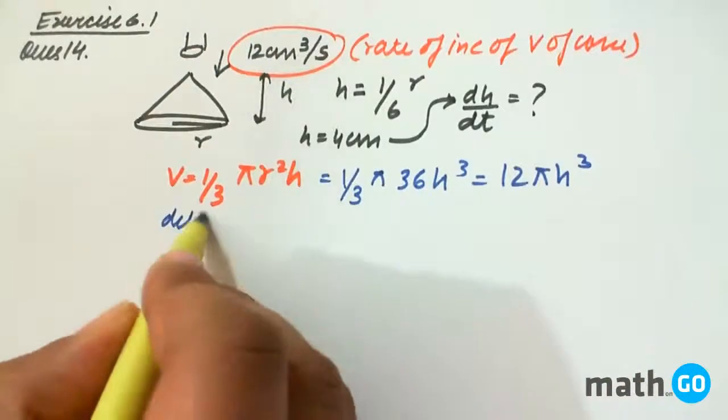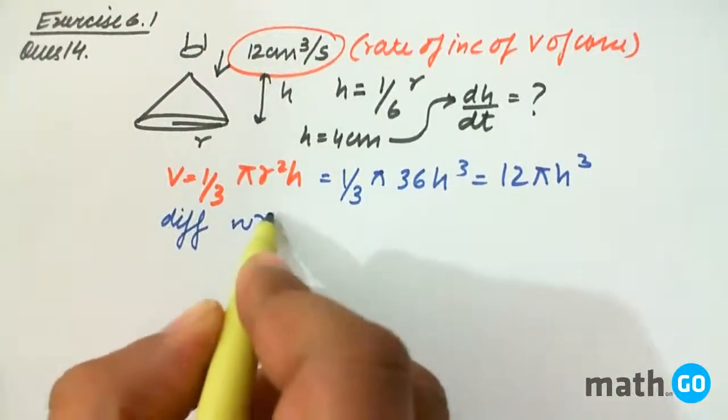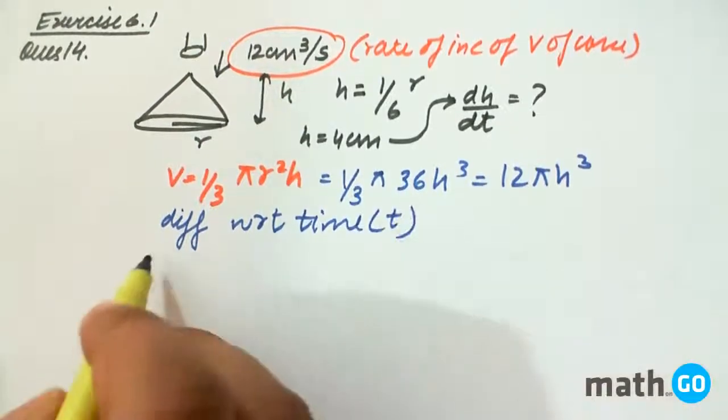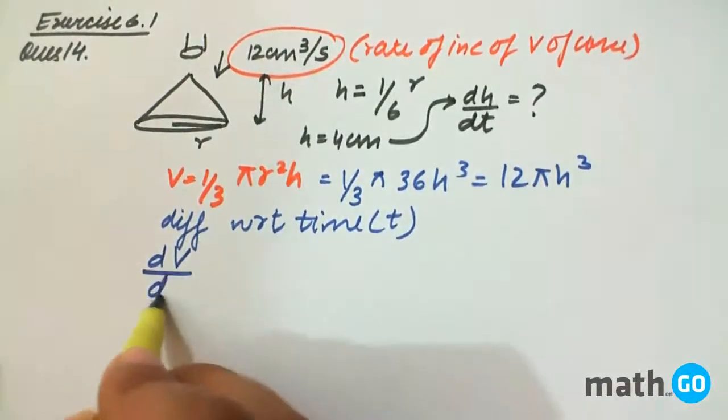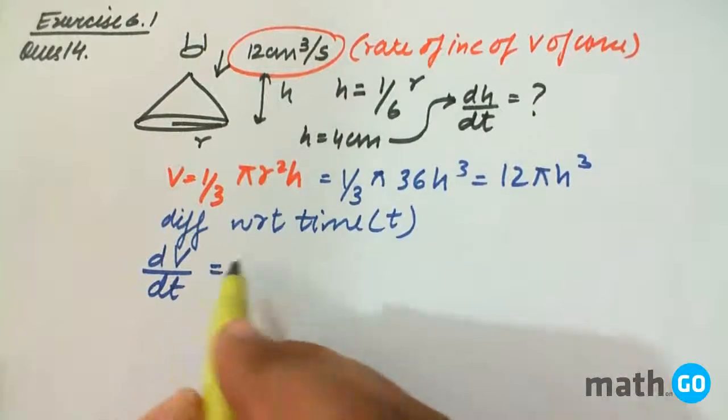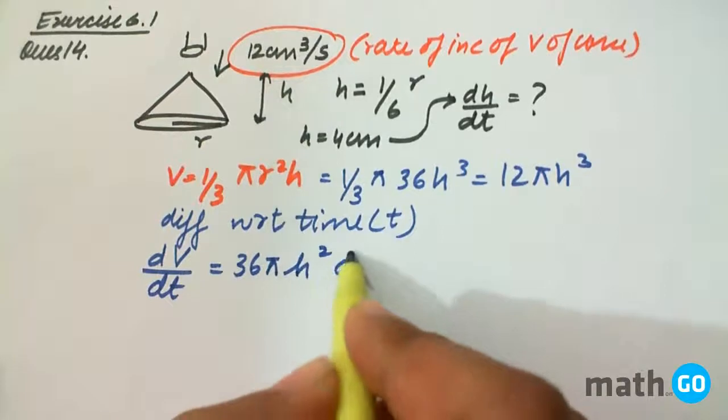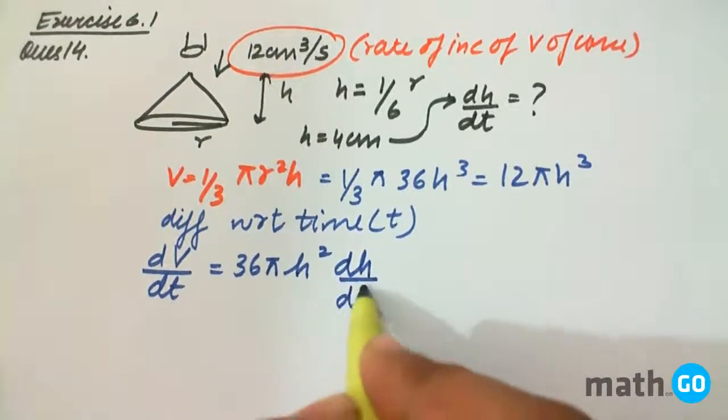Now we differentiate it with respect to time that is t. We get dV by dt equals to 36 pi h square into dh by dt. And we have to find dh by dt.